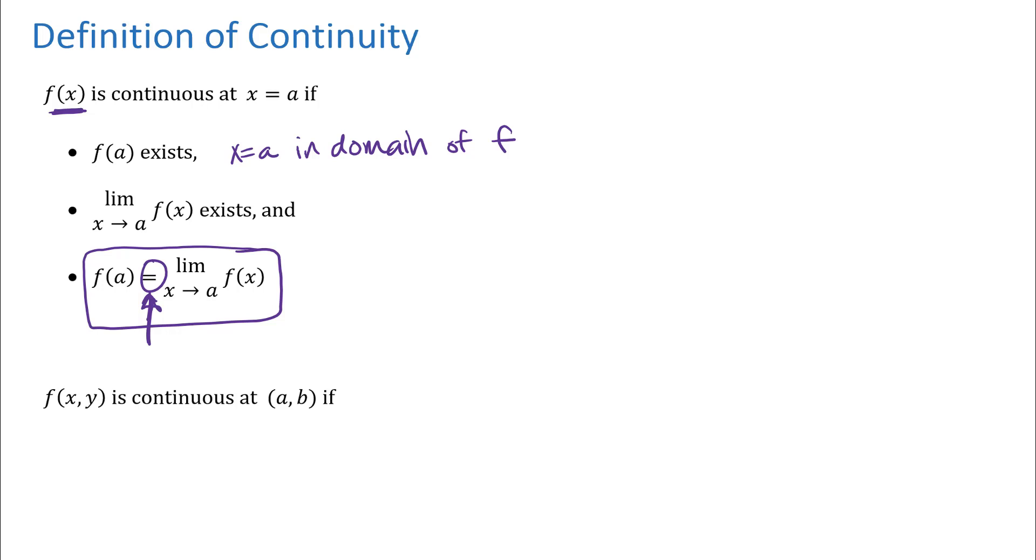Alright, so fortunately if you remember that definition from calculus one, then the definition here that we're looking at is exactly the same. I'm actually going to write it in this kind of last way, but that's going to indicate that both of the things on each side of the equals sign exist. So f of a b has to exist, so that means a b is in the domain of the function. The limit as x y approaches a b of our function exists, and then the other part here is that those two things are equal.